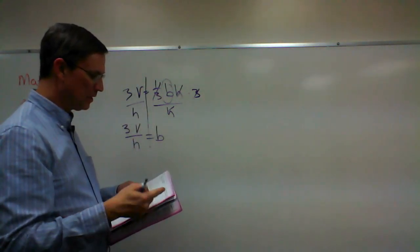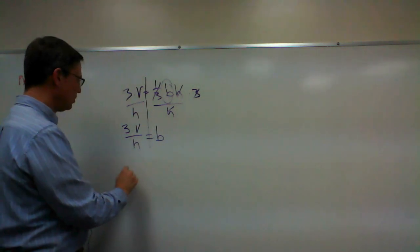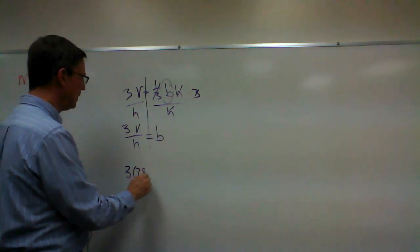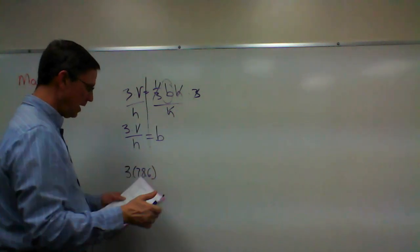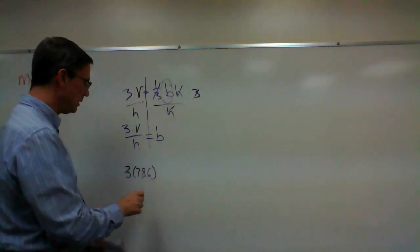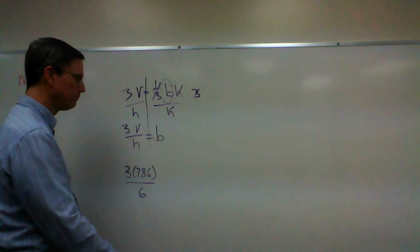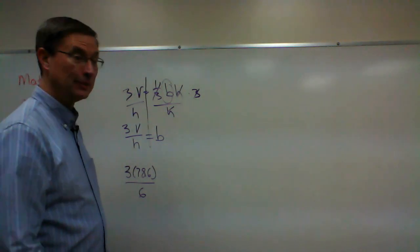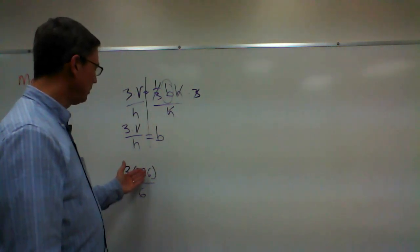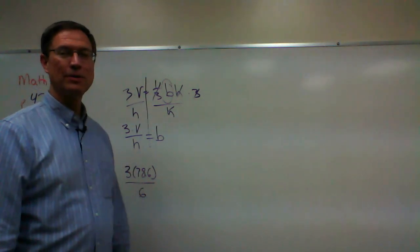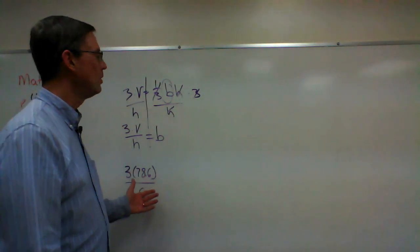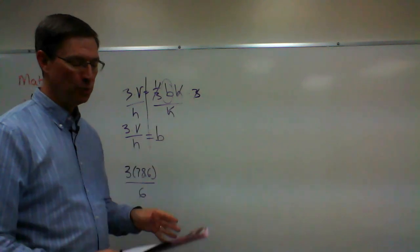78.6 is the volume, so I can say three times 78.6, and they tell me that the height is six. Now I'm going to let you finish that. You just multiply these two together, divide by six, and you're done. So it's not as hard, but we start with what we just did in the previous section.